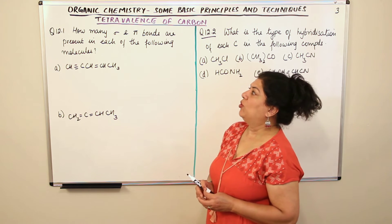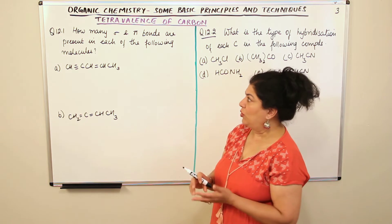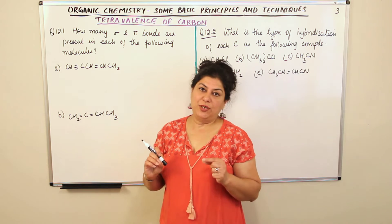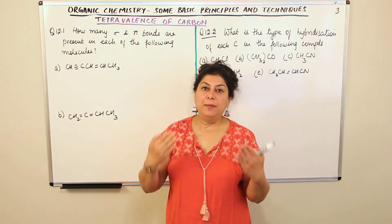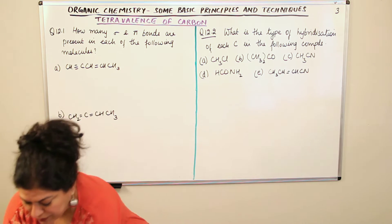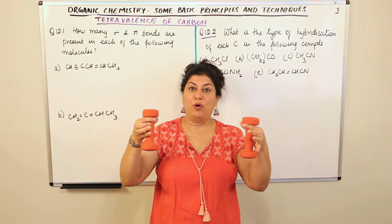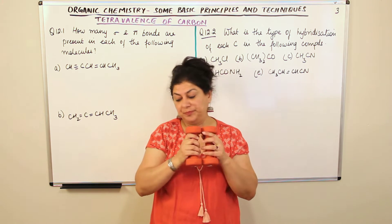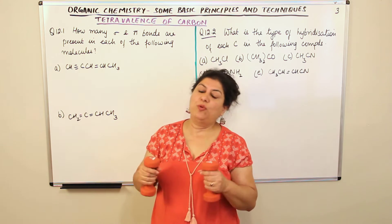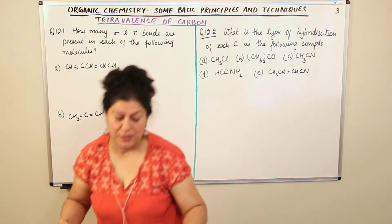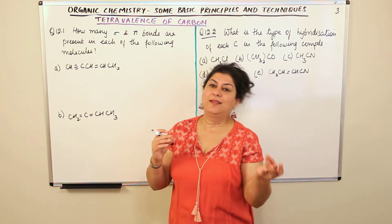How many sigma and pi bonds are present in each of the following molecules? The first bond formed between two atoms is always a sigma bond. A sigma bond is formed by the head-on overlap of orbitals, and a pi bond is formed by the sideways overlap of an orbital. So if the first bond is a sigma bond, a pi bond would be the second bond formed by sideways overlap. Whenever there is a single bond between two atoms it is a sigma bond, and in multiple bonds, the second and third would be pi bonds.